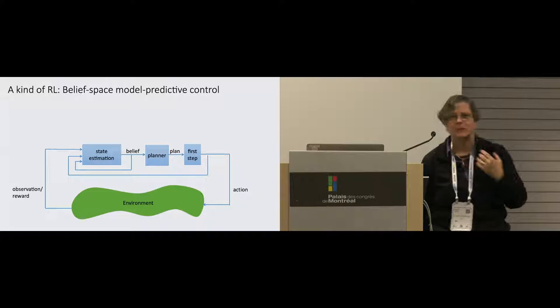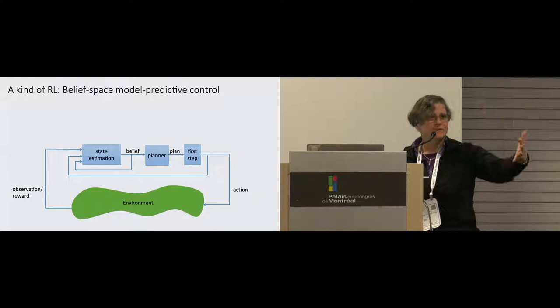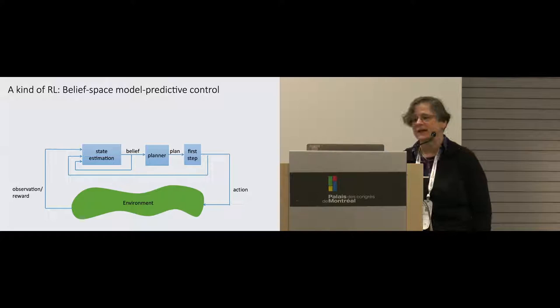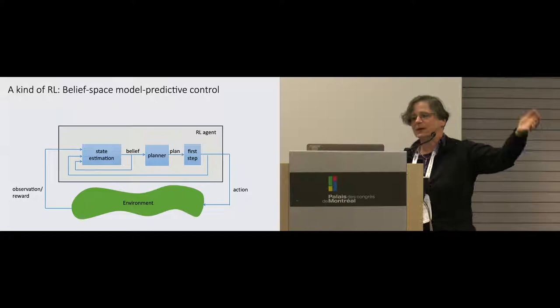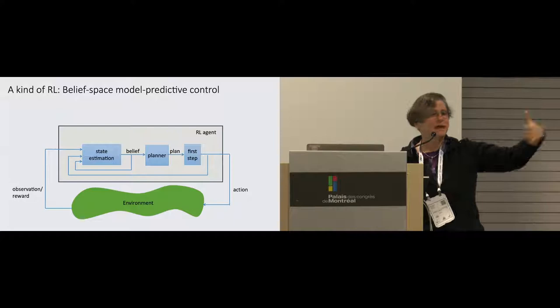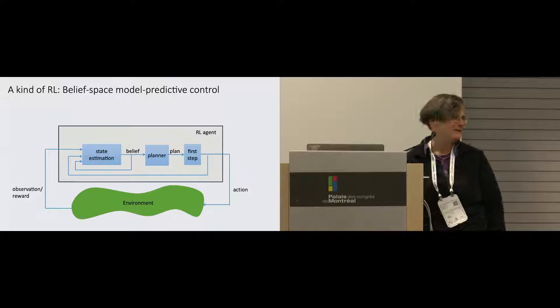We take a pretty old school approach to this problem. We think about a state estimator which is going to aggregate observations and actions that the system has taken over time, something that's going to make plans and take actions. So it's a kind of model predictive control approach that we take. But if you draw a certain kind of box and defocus your eyes and forget what's inside the box, it's reinforcement learning, right? Because we take in observations and rewards and we give out actions.